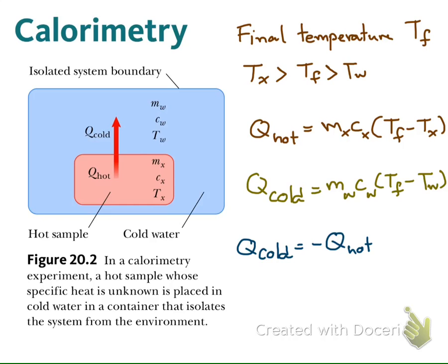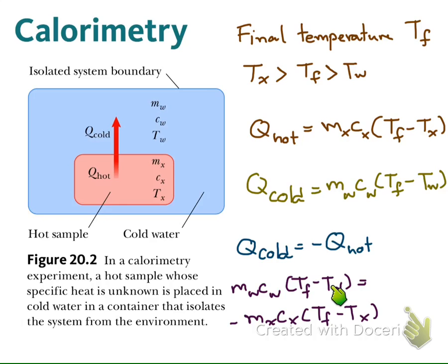Therefore, we have the equation: Mw·Cw·(Tf minus Tw) equals minus Mx·Cx·(Tf minus Tx). Experimentally, we can measure Tf using a thermometer, as well as Tw, Tx, and the masses of the water and the object. Since we know the specific heat of water, there is only one unknown, Cx, which we can solve from this equation. That is the way we can measure the specific heat of an object using the technique of calorimetry.